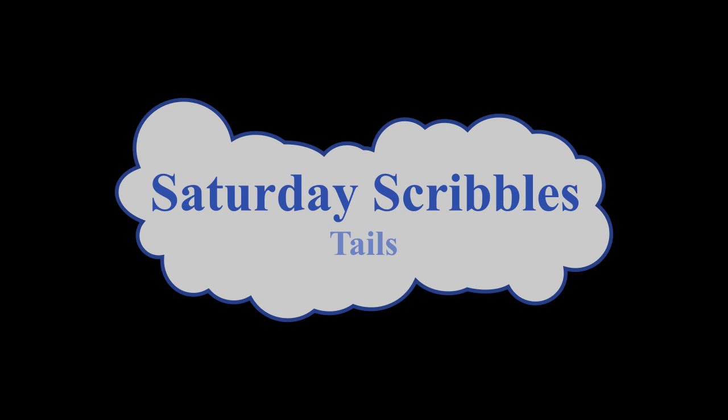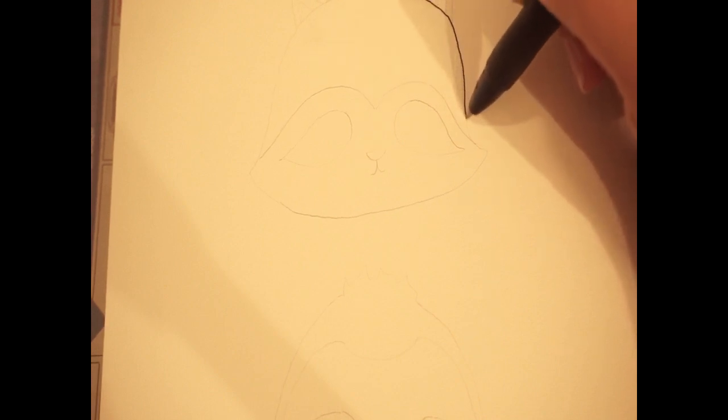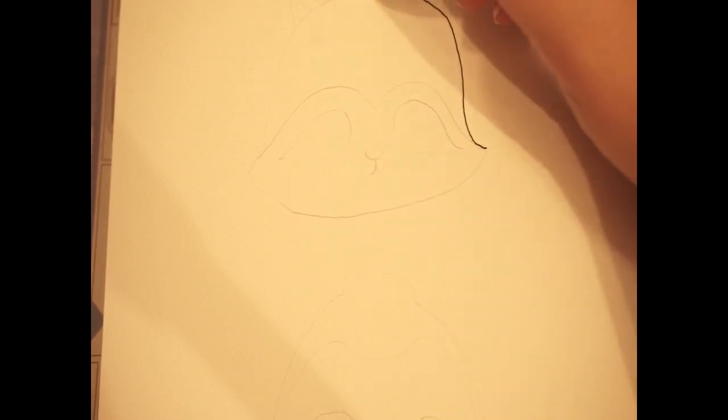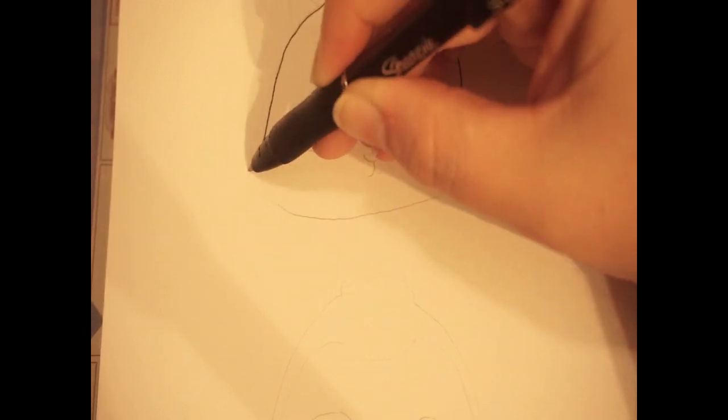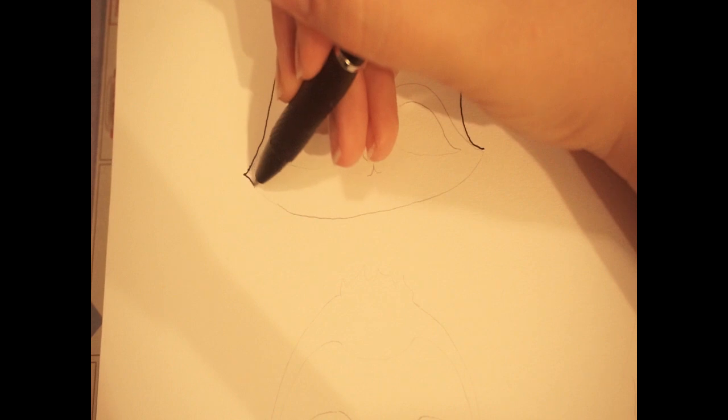Hello everybody and welcome to another Saturday Scribbles video to kick off early registration for the summer reading this year, which has the theme of tales and tails. I'll be drawing four easy animals for you to celebrate with us.